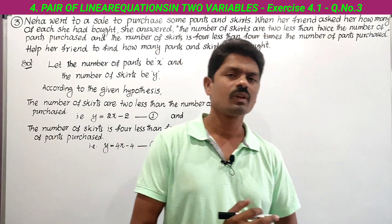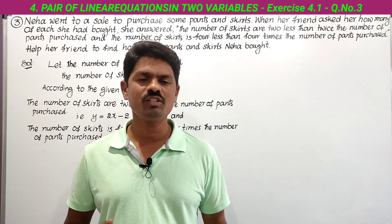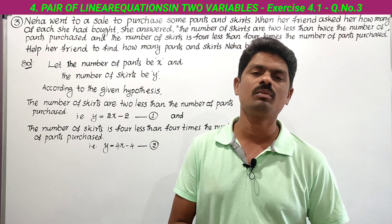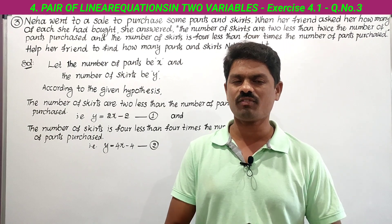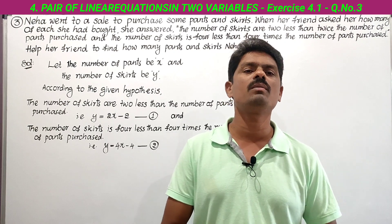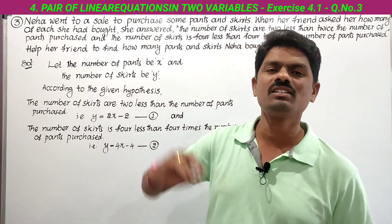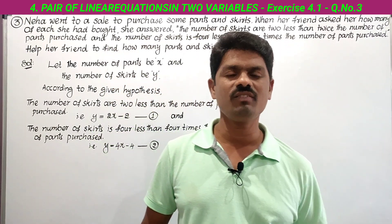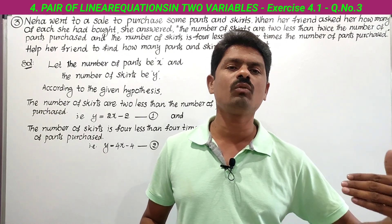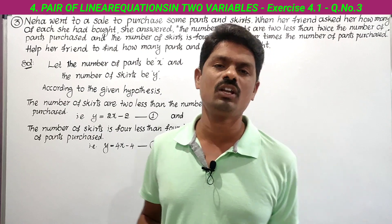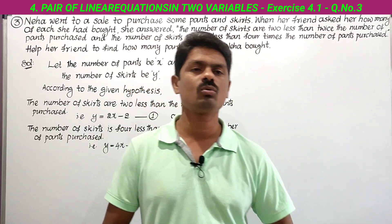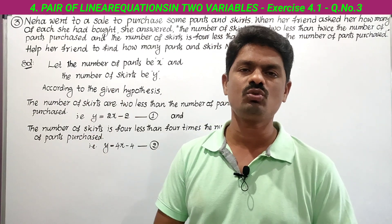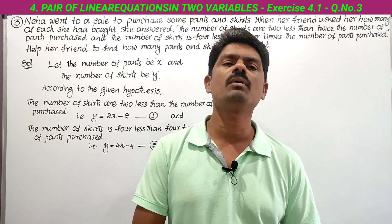In the second problem of Exercise 4.1, a pair of linear equations in two variables was given directly, and we were asked to solve them using a graph. But from the third problem onwards, a situation is given — the equations are not given directly. From this situation, we have to form a pair of linear equations and then solve them. So first we have to form the pair of linear equations from the given situation.